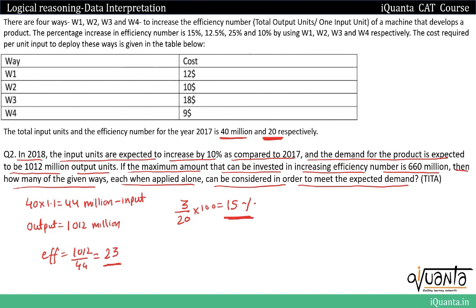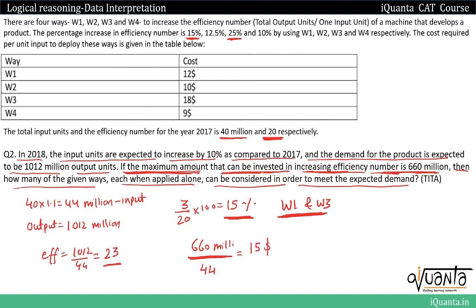We need ways with at least 15% increase in efficiency number. W1 gives 15% and W3 gives 25%, so both qualify on efficiency. Now checking the budget: total investment allowed is 660 million over 44 million input units, which gives a maximum of 660 ÷ 44 = $15 per unit input.